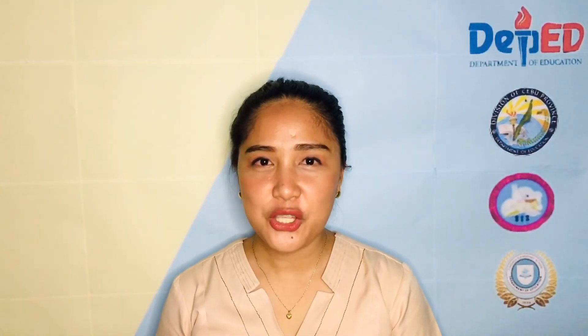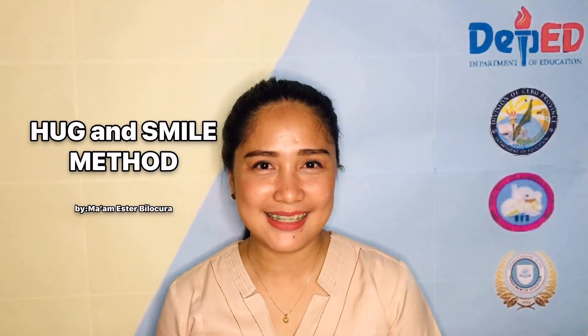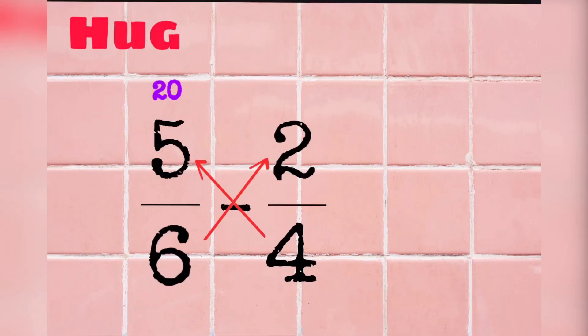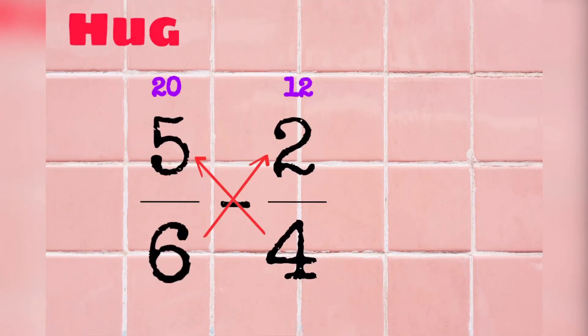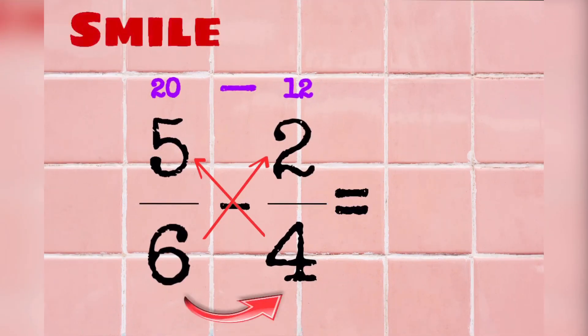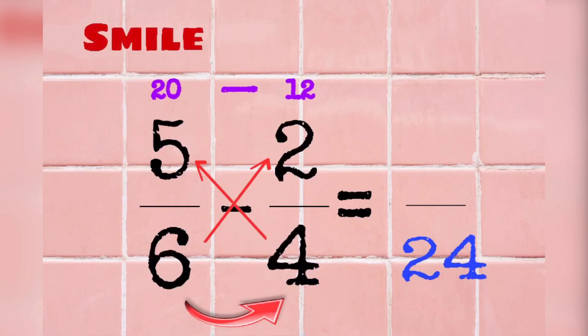Let me teach you a trick in adding and subtracting fractions using the hug and smile method. Let's take, for example, 5 sixths minus 2 fourths. Hug each other by cross multiplication. We have 5 times 4 equals 20. 6 times 2 is 12. 20 minus 12 equals 8. Then, you smile. 6 times 4 equals 24. We have 8 over 24 or one-third in simple form.